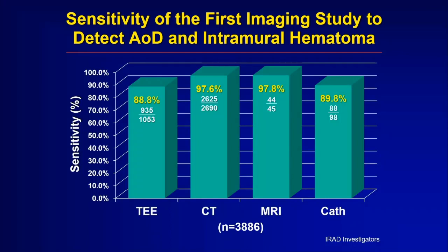Some emergency departments have magnetic resonance imaging right there, and that has a similar sensitivity. Sometimes patients get something called a transesophageal echo, where an echo probe is put down into the esophagus and we look at the aorta through a little scope. That's very good for type A dissection of the ascending aorta, but not as good for dissections in the descending portion — which is why the sensitivity for echocardiography is less than 90%.